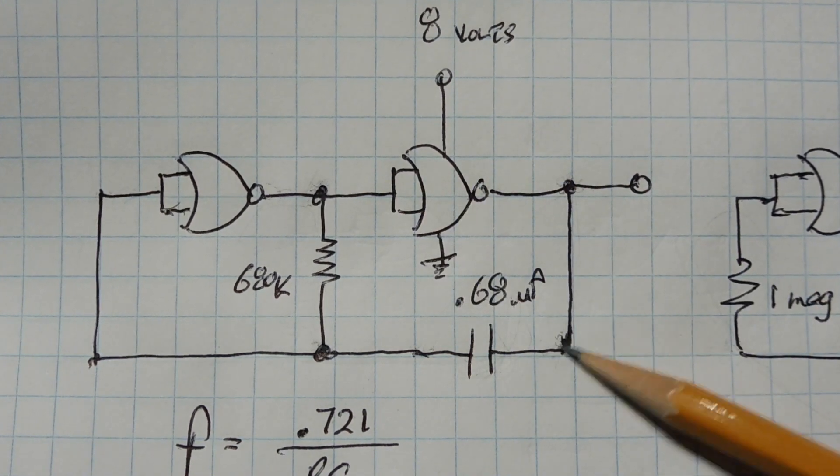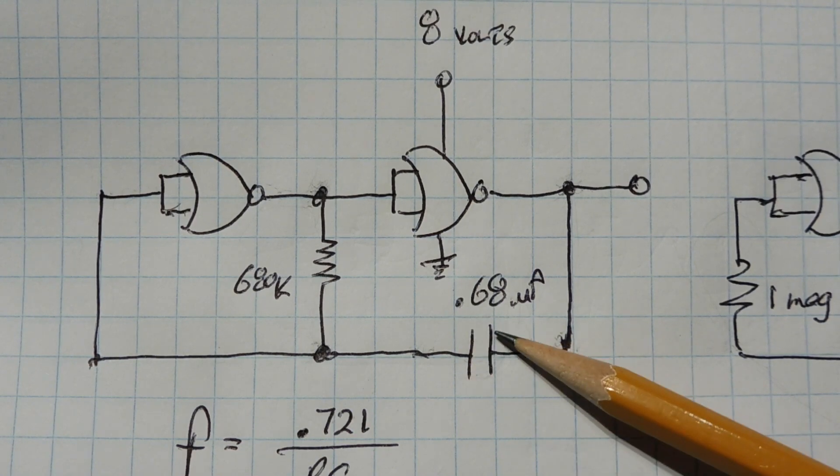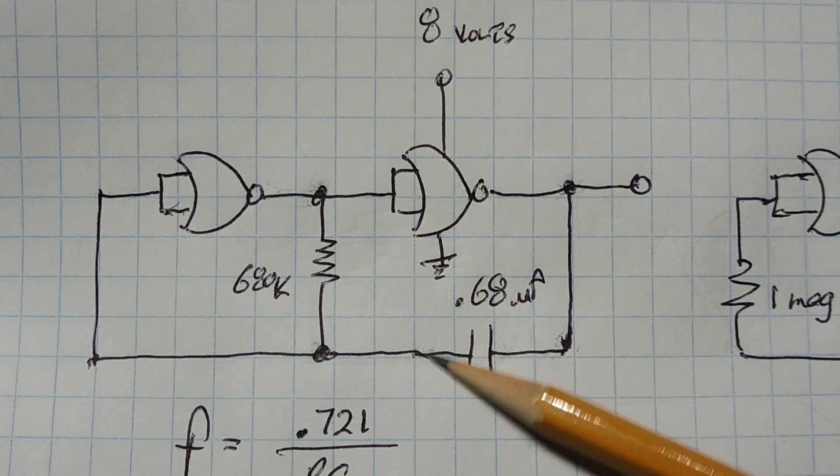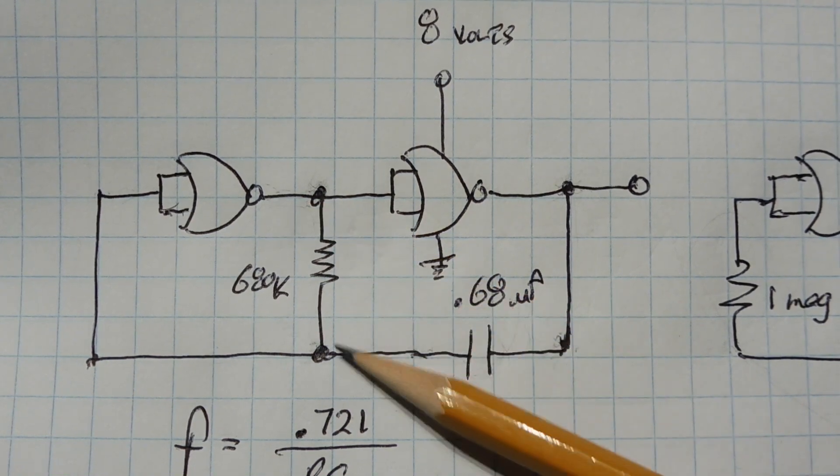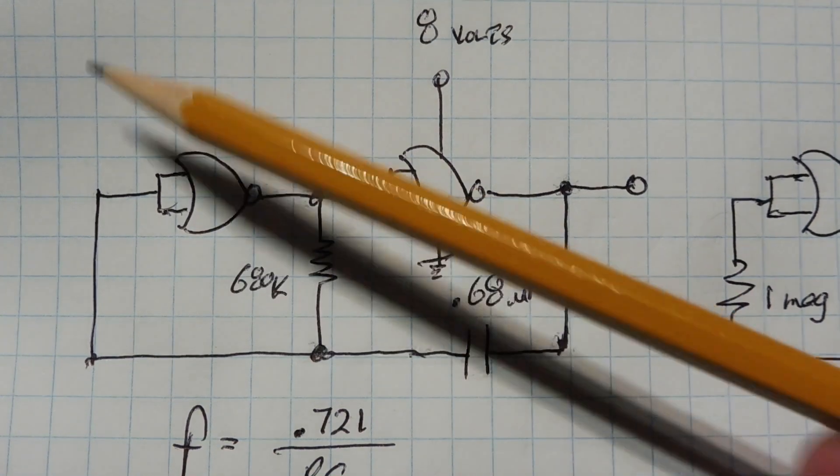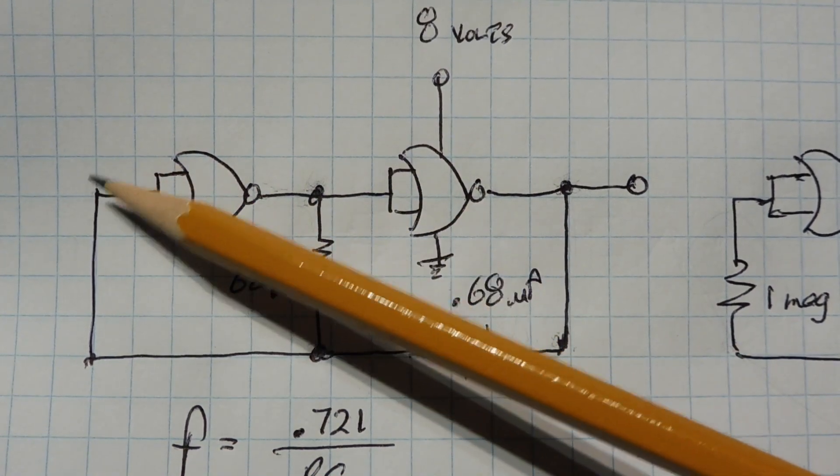So now this point is going to be eight volts plus the four volts that's charged up with the capacitor. We're going to have 12 volts on this side of the capacitor. This point is ground now, so now it's going to start discharging the capacitor through the resistor.